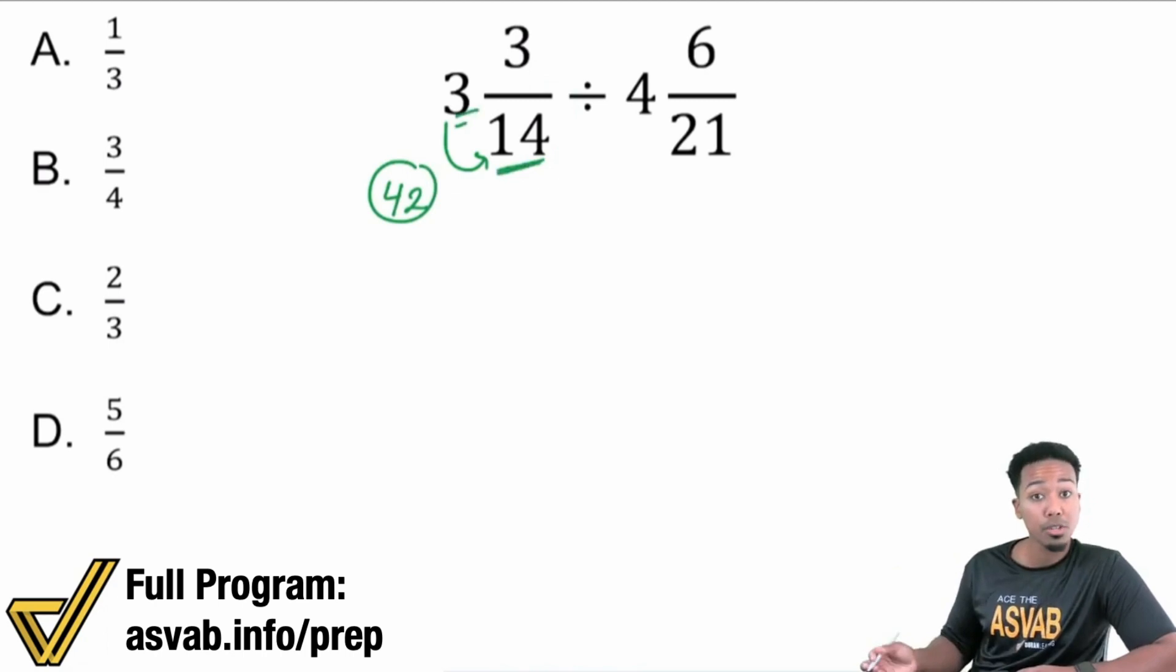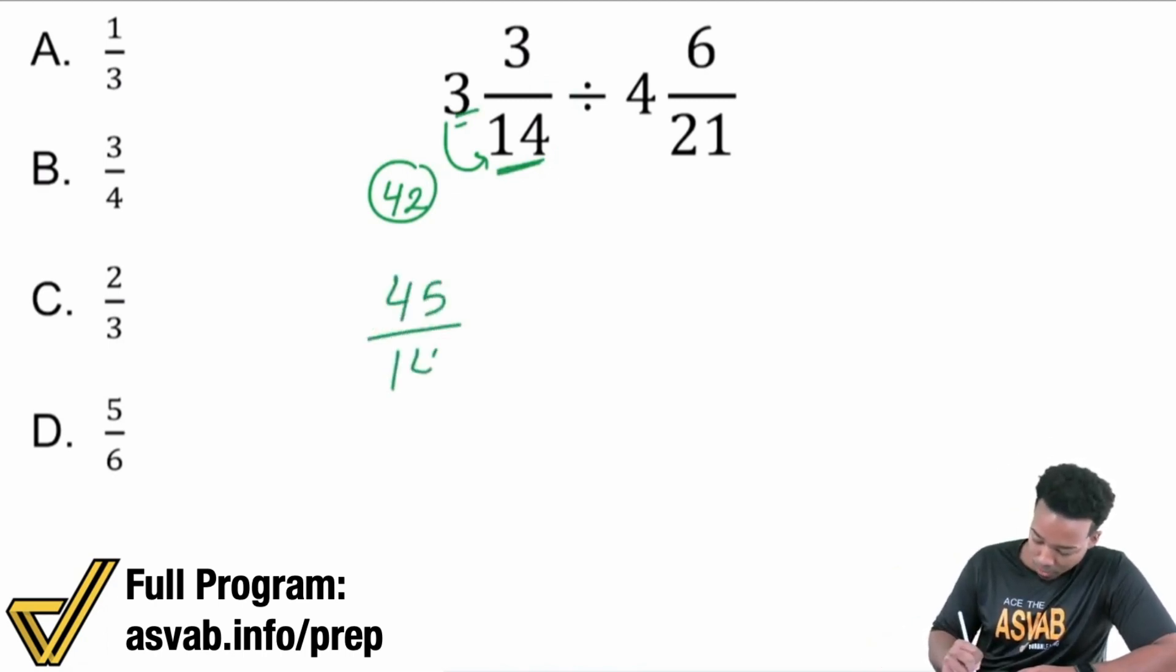Then you add it back. So whatever you get, you add it back to the numerator. So 42 plus three, that's going to give us 45 over 14. Remember that the denominator stays the same. All you're doing is you're saying, hey, look, every whole number is 14. So we have three of those 14s and that's why we multiply. And then we'll put it back up there with the three that's already there to get 45.